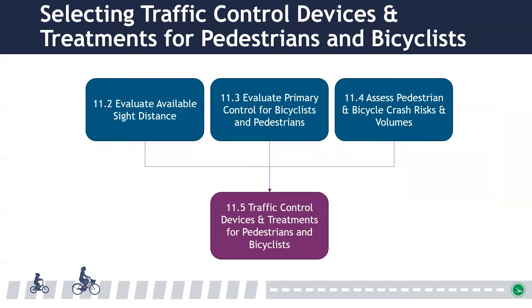Sections 11.2 through 11.4 are to be used to evaluate a crossing, and then use those assessments in conjunction with 11.5 to determine the appropriate traffic control devices and treatments. We'll walk through each of these sections briefly.